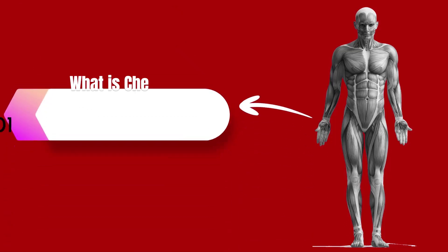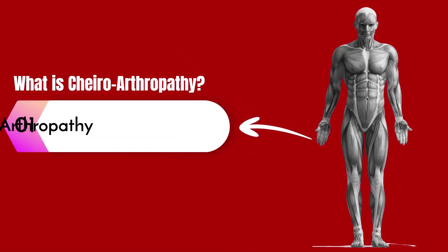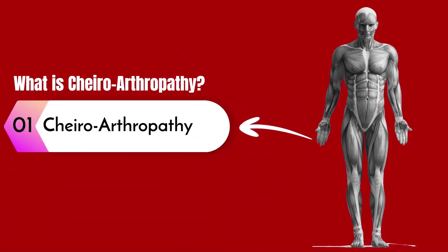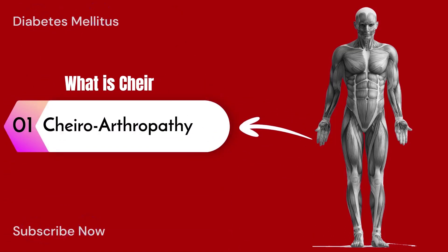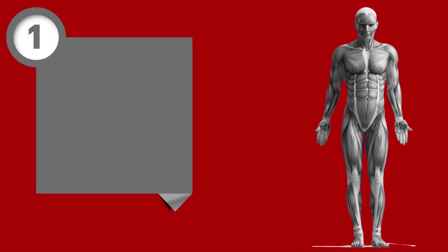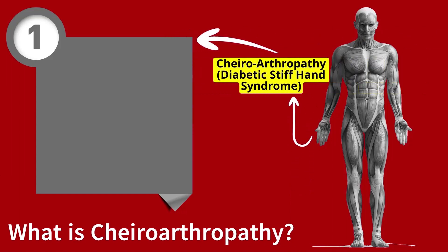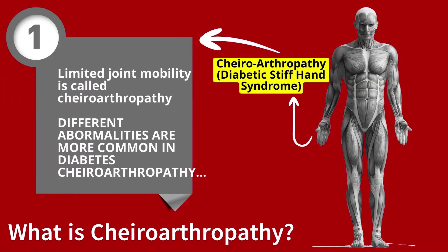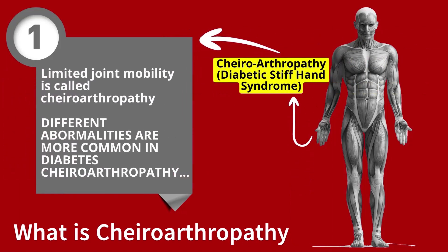Diabetes is a deadly disease, and if it is not treated properly, its effects begin to show on the hands, which is called chiroarthropathy. In chiroarthropathy, the movement of the joints of the hands is limited — that is, the joints of the hands feel stiff while moving.